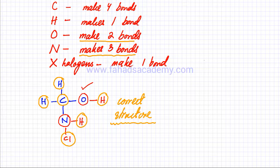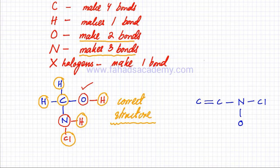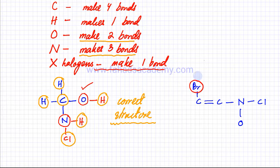Let's draw another random structure. We have a carbon bonded to another carbon with a double bond, which is bonded to a nitrogen, further bonded with Cl. The first carbon is bonded with oxygen, and there's also a bromine. Now I'll start correcting this incomplete structure. Bromine is a halogen and halogens make one bond — it's doing that, so bromine is correct.